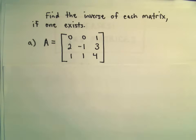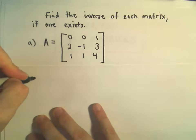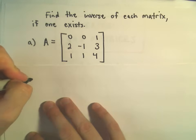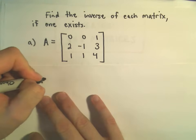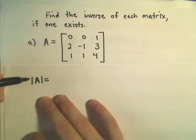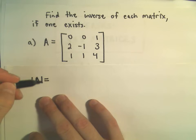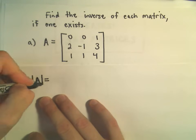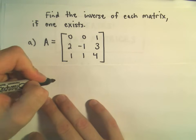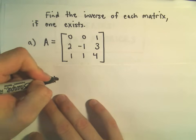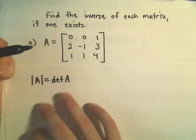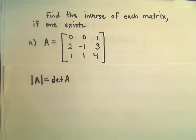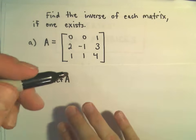The first thing I'm going to do is find the determinant of A. There are different notations for the determinant — either it looks like the absolute value of A, or I always saw it written as det(A).